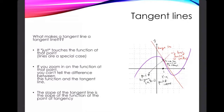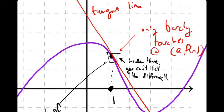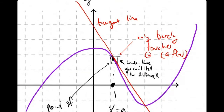Another thing we're going to work on understanding is that the slope of the tangent line is the slope of the curve at that point. If I had to draw a line of best fit that describes the curve — and I'm only allowed to draw straight line segments — I'm going to draw a straight line segment that's just a segment of the tangent line.